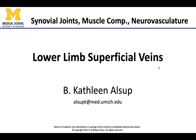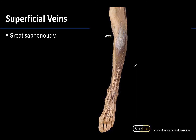Hello all, this is Dr. Alsup, and in this video we will discuss how to identify the major superficial veins of the lower limb. There are two major superficial veins of the lower limb. What makes these veins superficial is that they will be embedded within the subcutaneous tissue, though in terms of imagery that tissue is often removed in order to better see the structures.